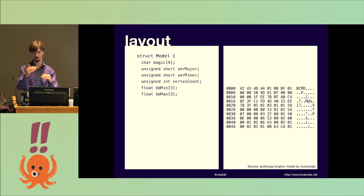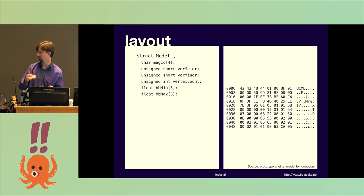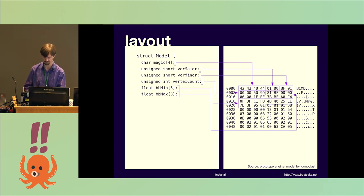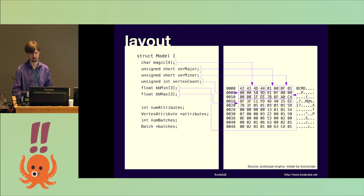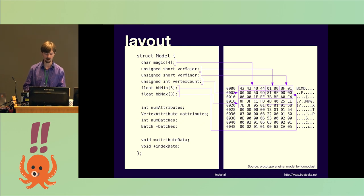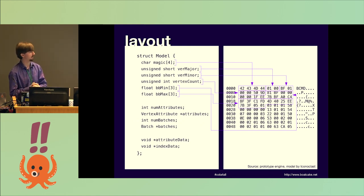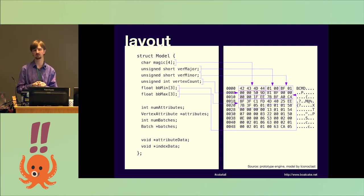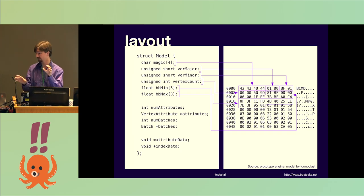As for where things actually go in the file, the obvious answer is to just put one thing after another, like a C struct in memory. Here's an example of that. But it gets more complicated when you have arbitrarily sized arrays or complex data types. One way to do a dynamically-sized array is to have the count of the thing and then that number of items immediately following.